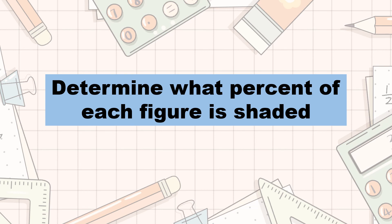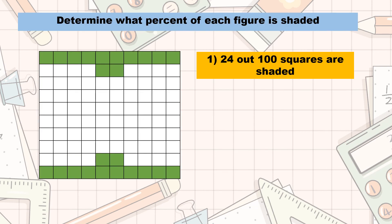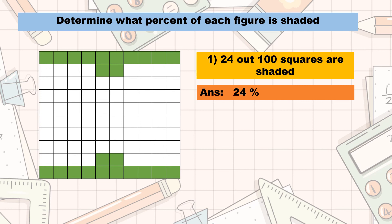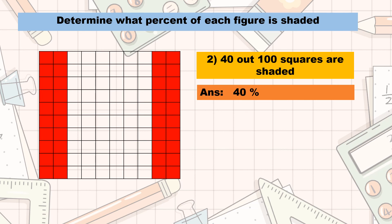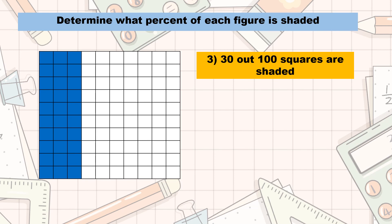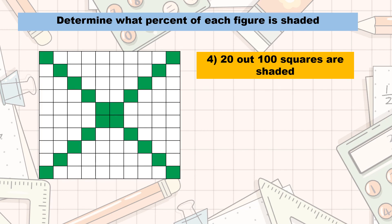That's it for our lesson. Now, let's see if you can apply what you have learned. Let us determine what percent of each figure is shaded. For number 1, 24 out of 100 squares are shaded — the correct answer is 24%. For number 2, 40 out of 100 squares are shaded — the shaded region is 40%. For number 3, 30 out of 100 squares are shaded — 30 out of 100 is 30%. For number 4, 20 out of 100 squares are shaded — the correct answer is 20%.